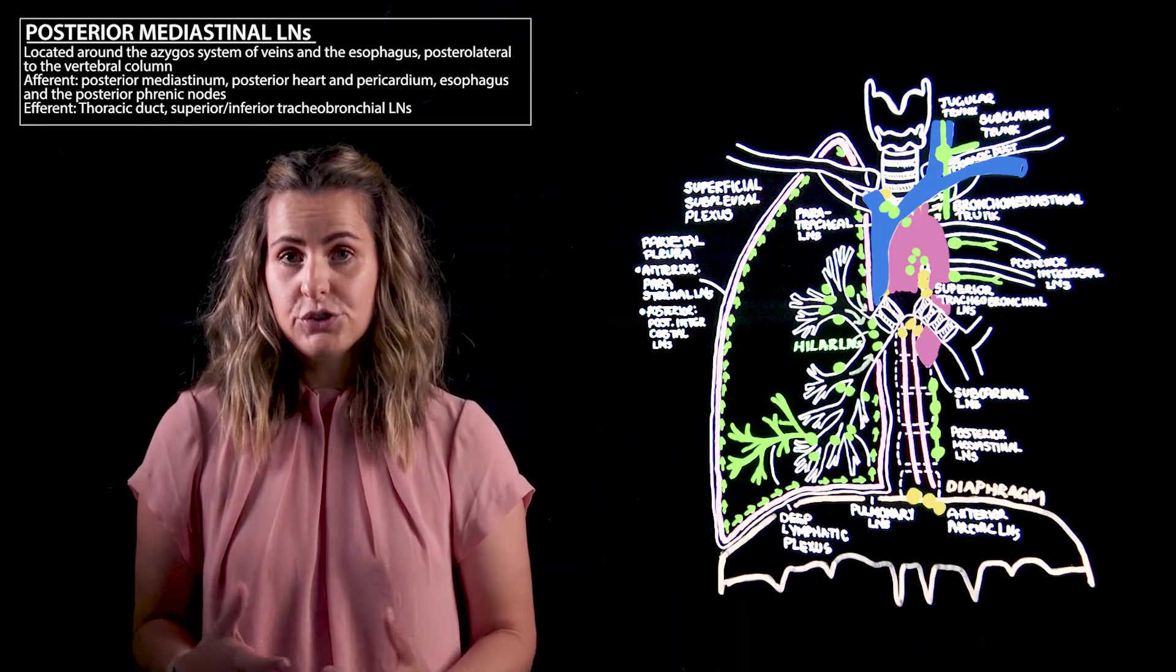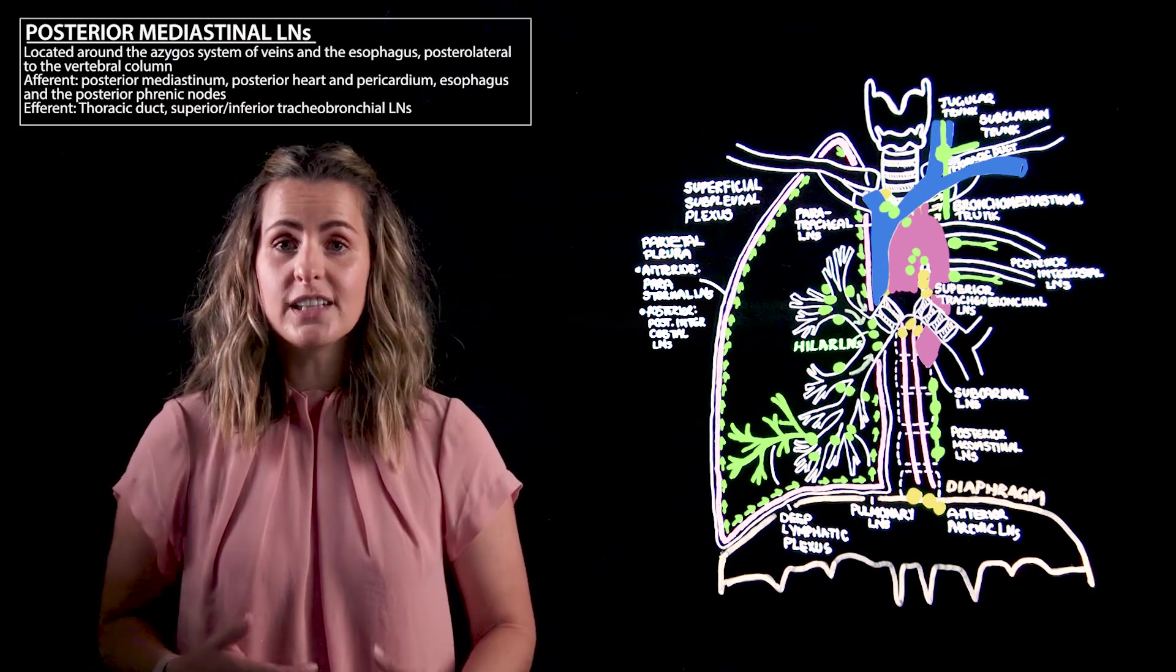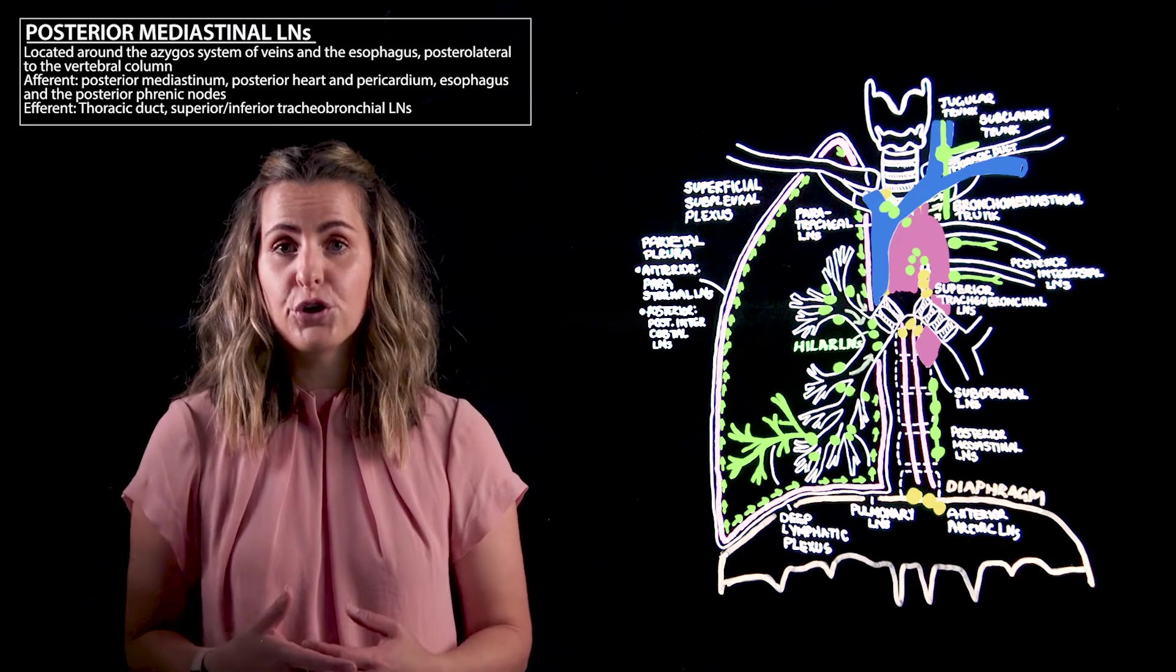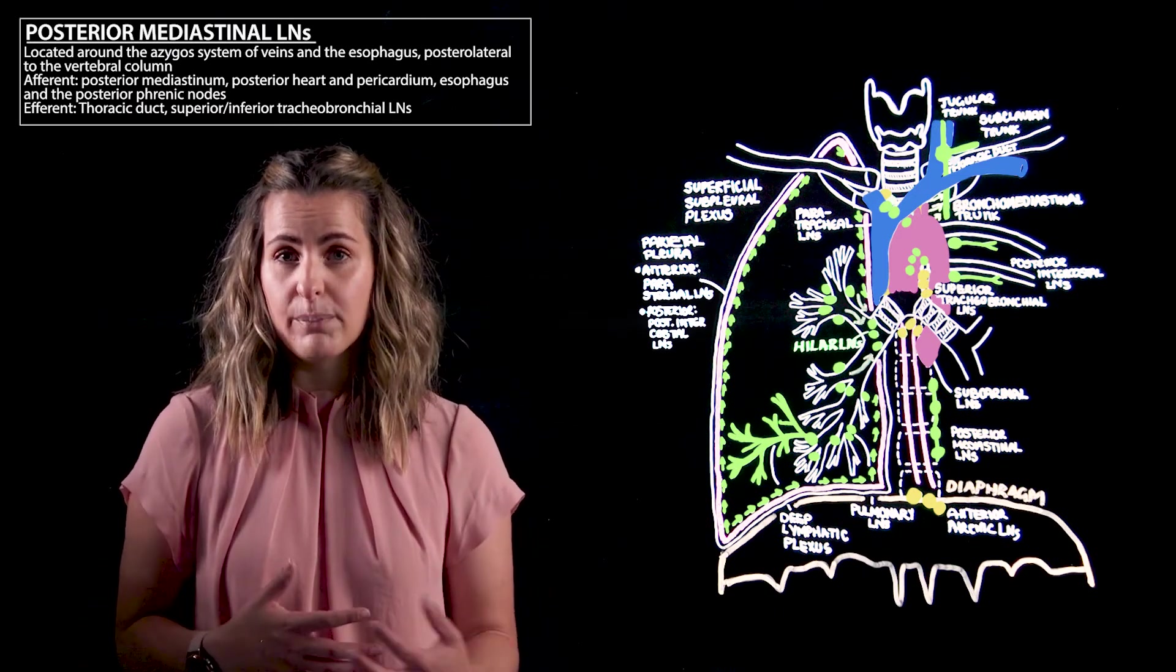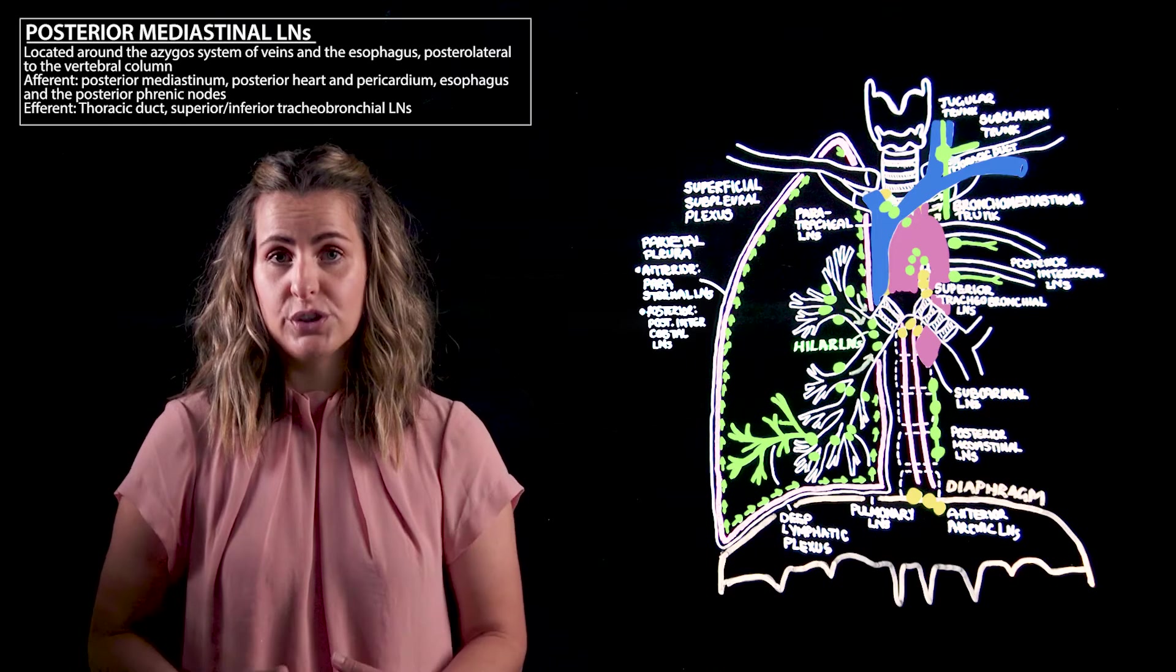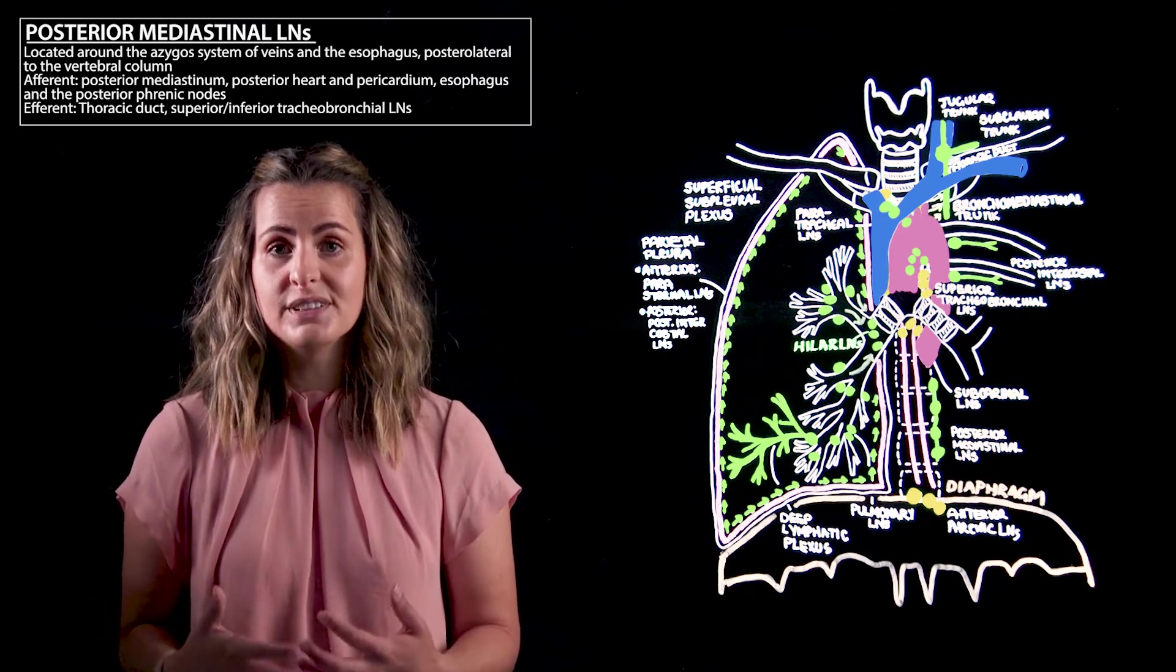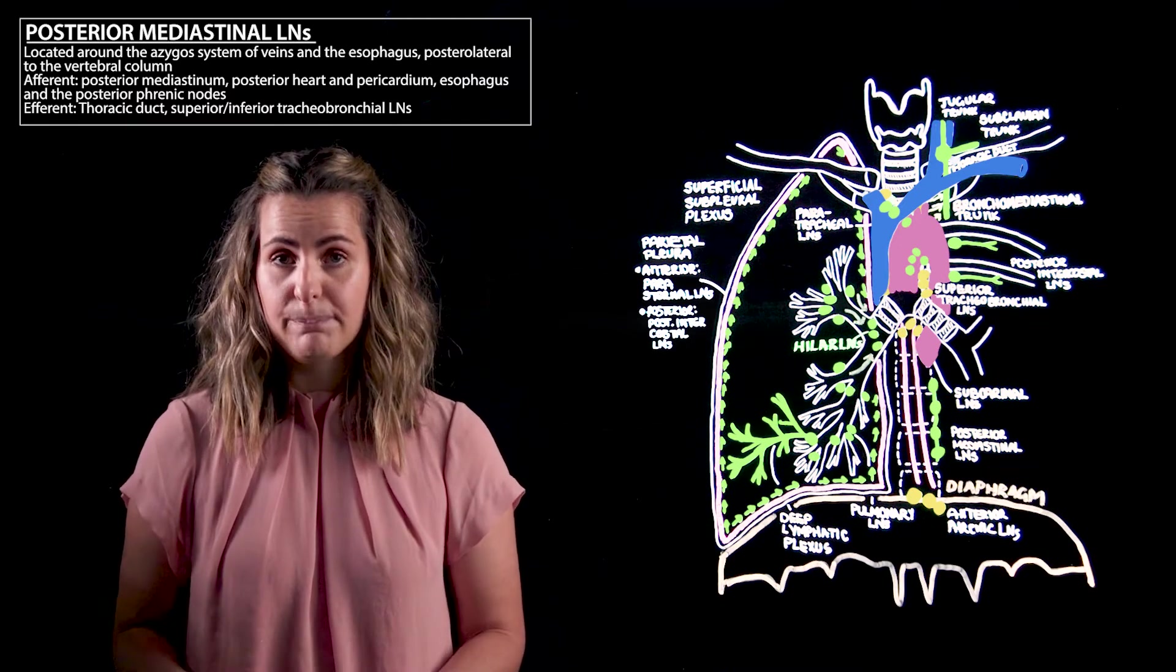These are going to drain the posterior mediastinum, the posterior aspects of the heart and pericardium, the esophagus, as well as the posterior nodes of the diaphragm or our posterior phrenic nodes. The posterior phrenic nodes are located on the posterior aspect of the crura of the diaphragm.